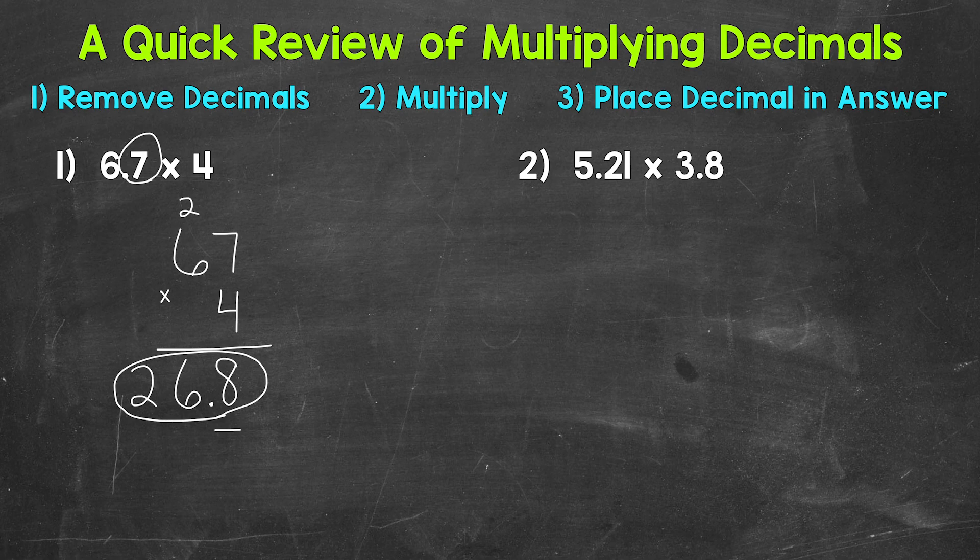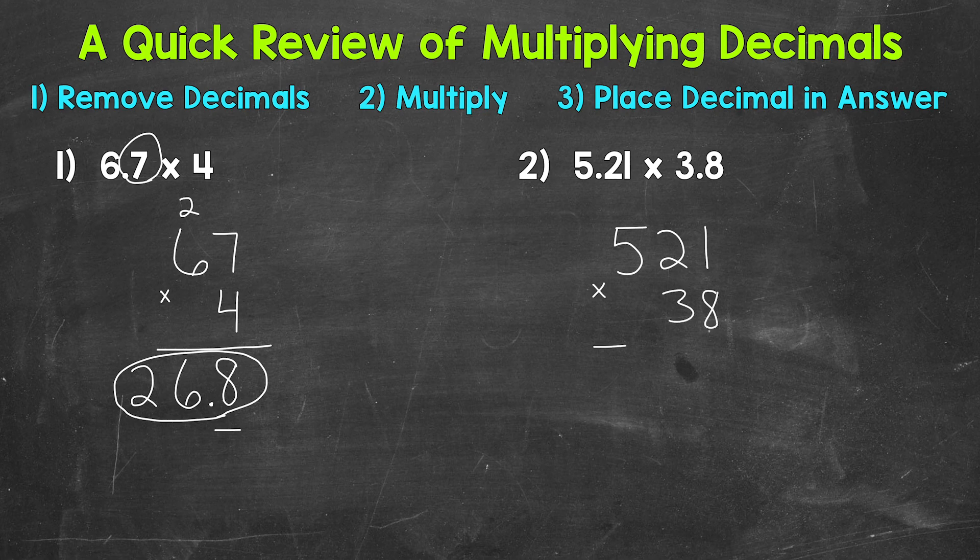Let's move on to number 2 where we have 5.21 times 3.8. So let's remove the decimals and rewrite this problem. So 521 times 38. Now we're ready to multiply.